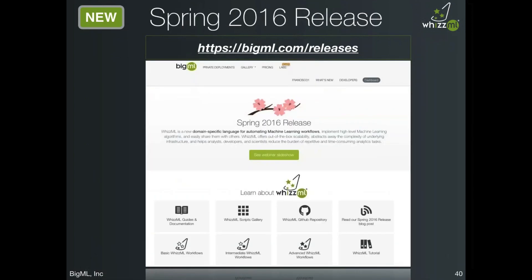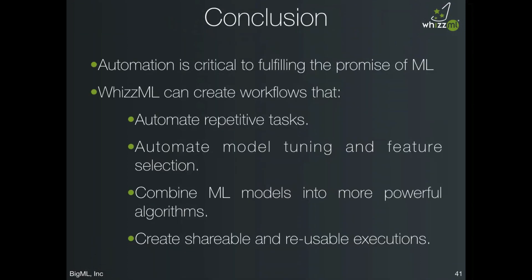If you can only remember one resource, go to bigml.com/releases — this is where we announce all the latest releases and contains links to all the information and documentation previously described. To summarize: automation is critical to the fulfillment of the promise of machine learning — taking data and turning it into insights. To that end, we have created WizML: a tool which allows creation of workflows that automate repetitive tasks, model tuning, and feature selection, combine machine learning models into more powerful models, and create shareable and reusable executions, meaning the platform gets more automated with every script written.